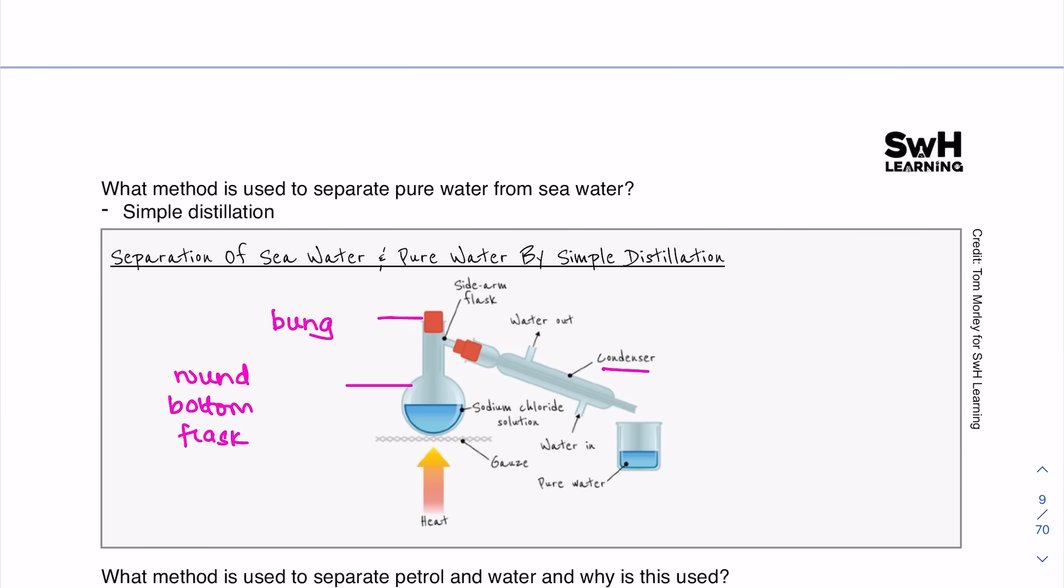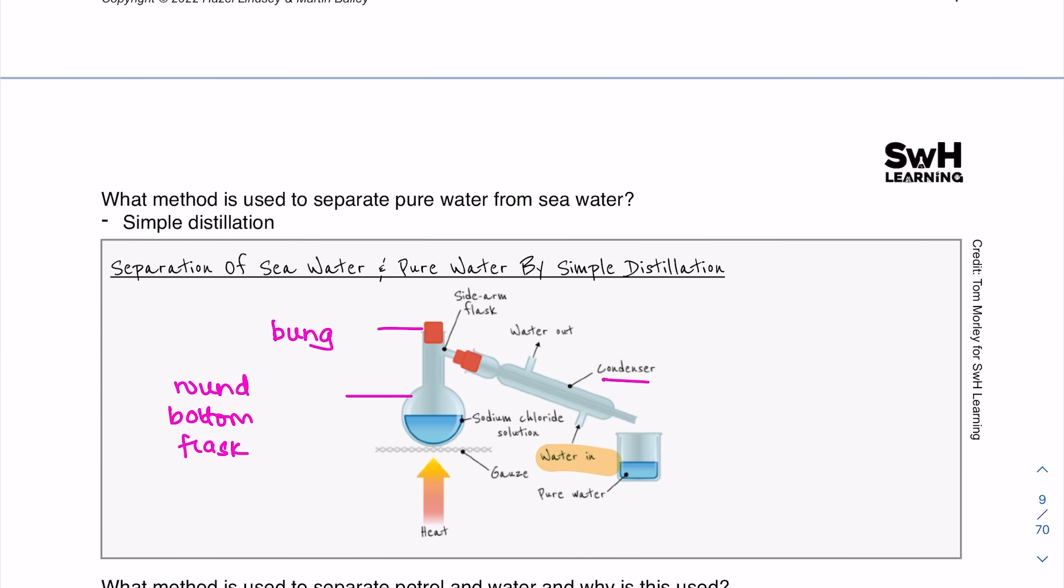This is an important piece of apparatus known as a condenser. It helps to cool down the gas from the liquid that's evaporated, so that gas down here it helps to cool it down and turn it back into a liquid. Notice that the water goes in at the bottom of the condenser and the water goes out at the top.